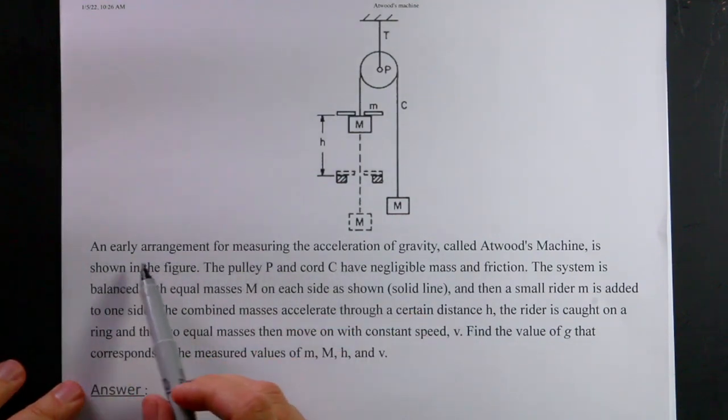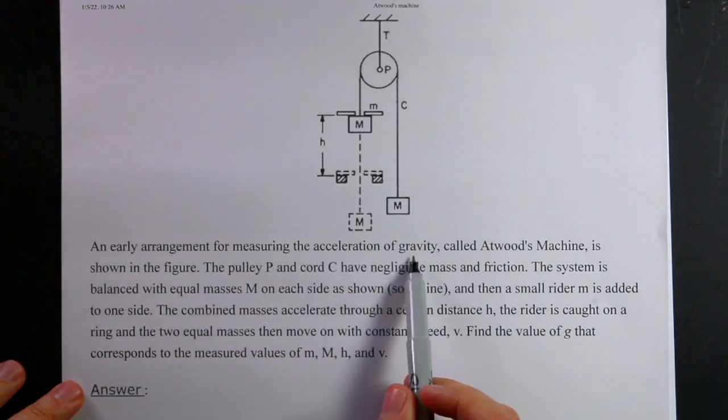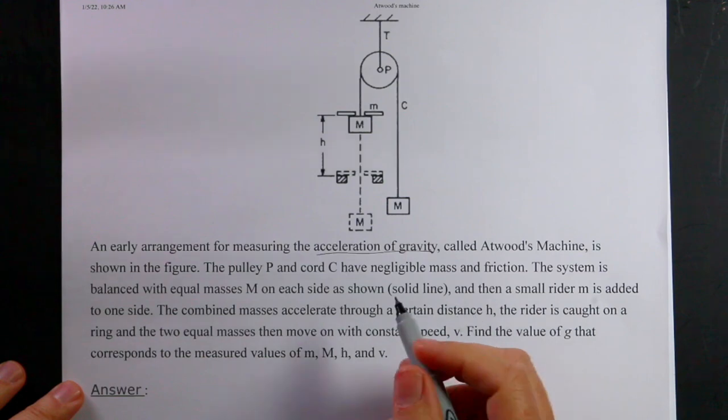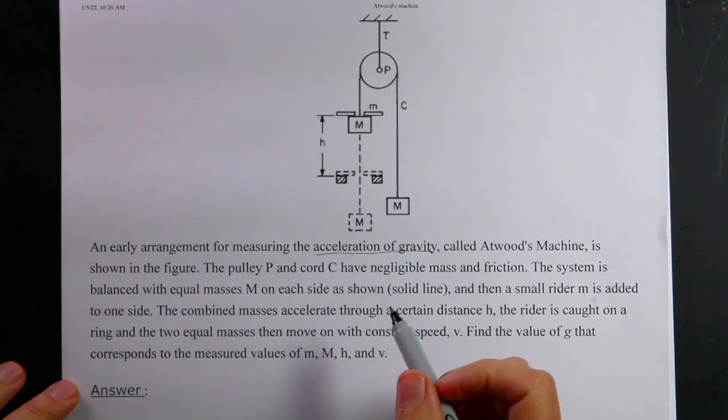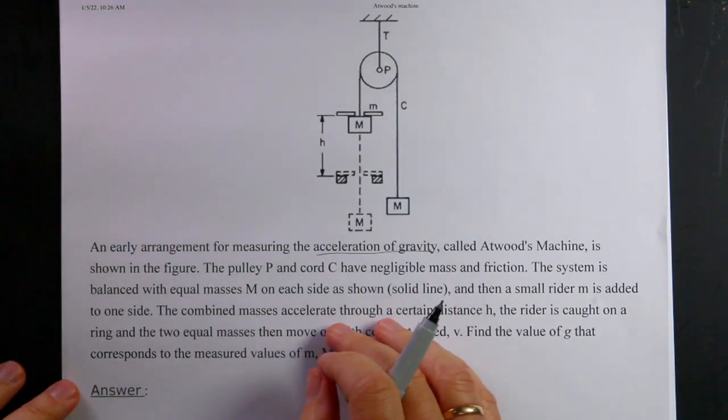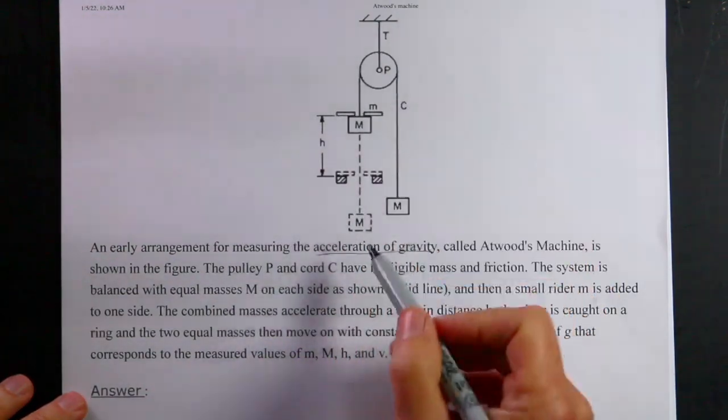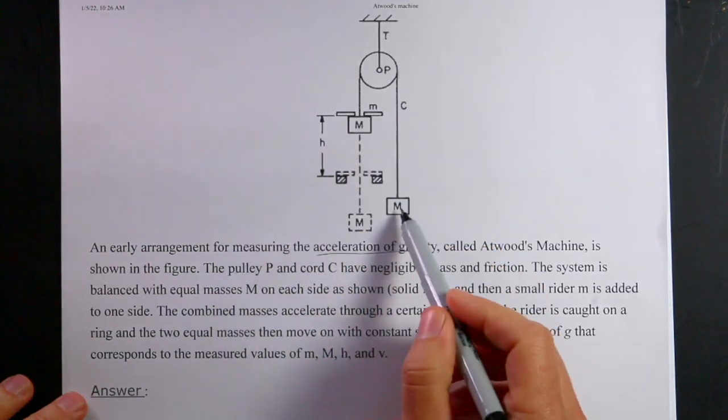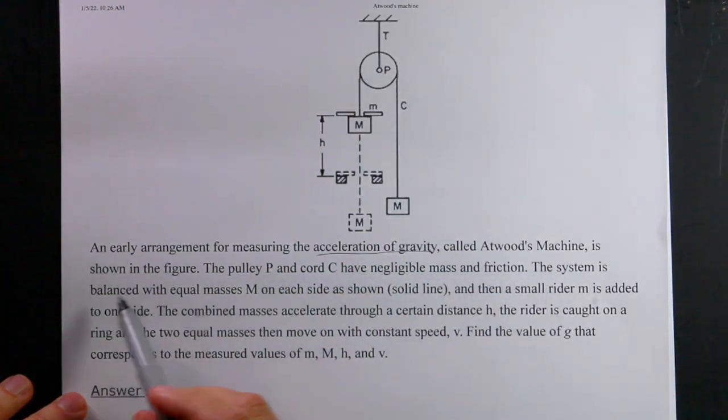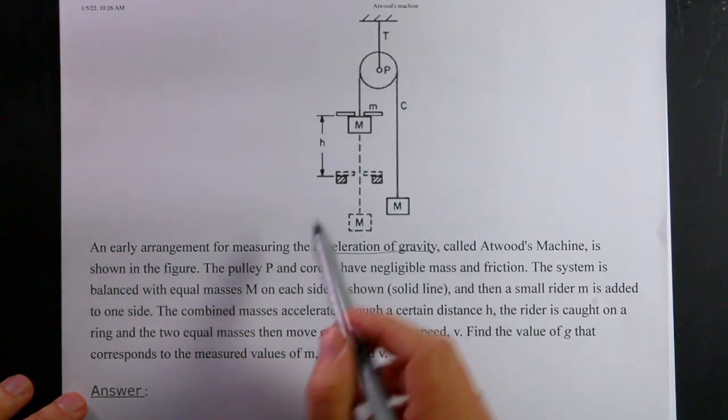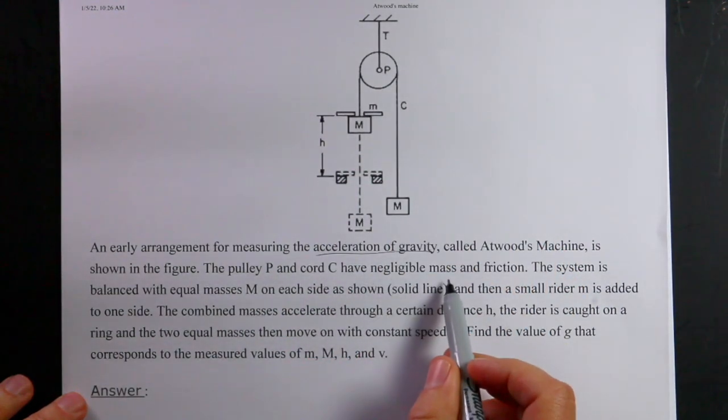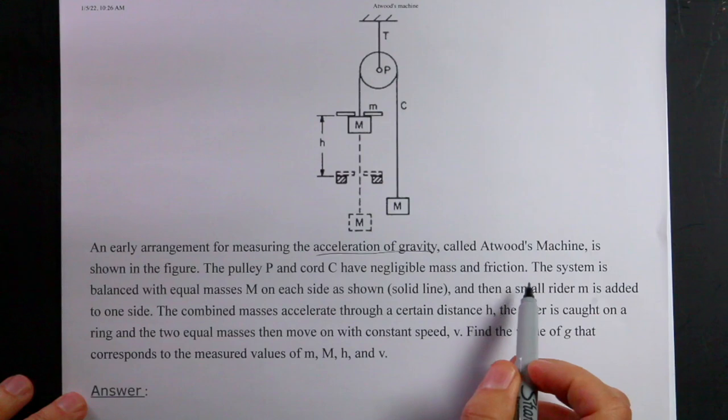Okay, so here we have an arrangement for measuring the acceleration of gravity, which I don't like that. I mean it's okay, but that's just a pet peeve of mine. I'd rather call it the gravitational field. Atwood's machine. So Atwood's machine has a pulley up here and then two masses. These are two equal masses like that. Pulley P, I guess that's it right there, and chord C have negligible mass and friction. Okay, that's fine.